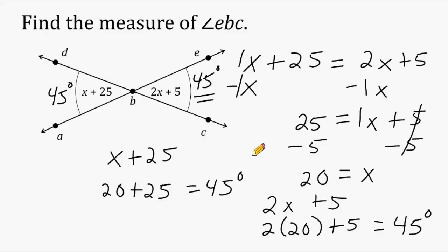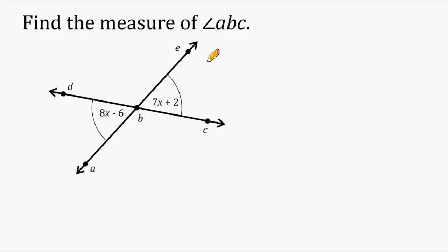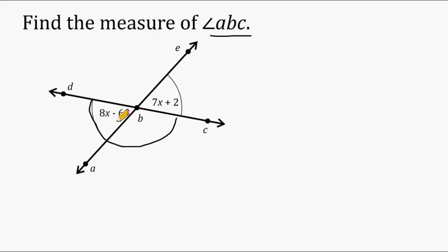Let's try another example. For this example, we have to figure out the measure of angle ABC. Angle ABC is this angle right here, and notice it does not have an expression to represent its angle measure. But if you take a look at either one of its adjacent angles, we should note that that angle with angle ABC would form a straight angle. So this angle is the supplement to ABC. Supplementary angles always have a sum of 180 degrees. So if we can figure out this angle here, we can subtract that from 180 degrees to determine the angle measure of ABC.